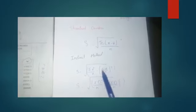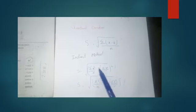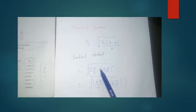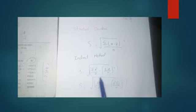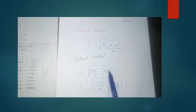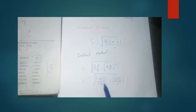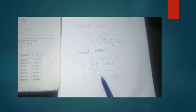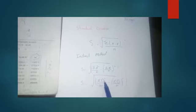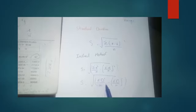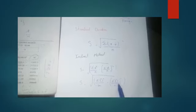The shortcut or indirect method formula is: under root of (summation x² divided by n) minus (summation x divided by n) whole squared. Another version uses d: under root of (summation d² divided by n) minus (summation d divided by n) whole squared. Let's calculate the same example using this method.